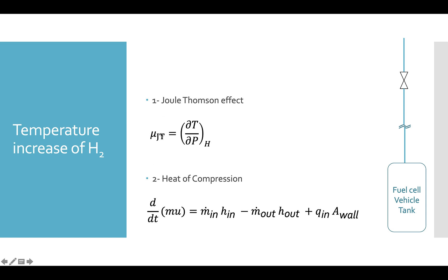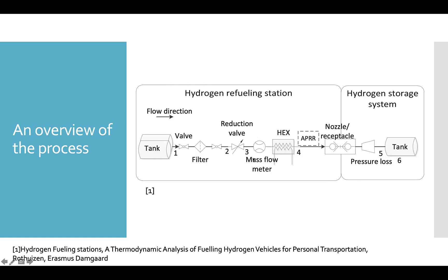However, if the Joule-Thomson coefficient in our working conditions is negative, then the temperature actually changes in the opposite direction of the pressure — so if the pressure decreases, the temperature is going to increase. For hydrogen in the working conditions we're dealing with, the Joule-Thomson coefficient is negative, so when the pressure drops, the temperature is actually going to increase.